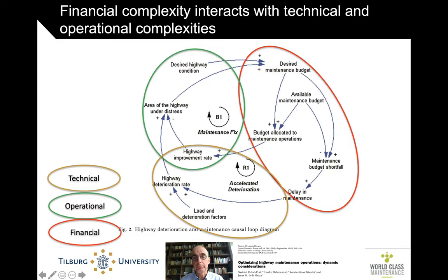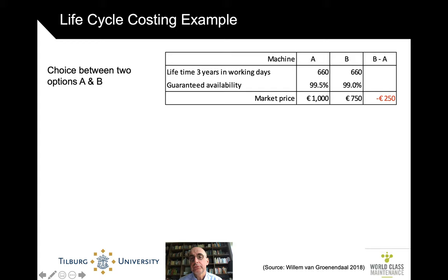Let's have a simple example. We have two machines: machine A and machine B. They both do the same thing. They both have a guaranteed lifetime of three years, which is in working days some 660 days. They almost have the same guaranteed availability of 99% or even 99.5%. Big difference: B is a lot cheaper than A. So this seems to be an easy decision — let's choose B because that's the cheaper purchase price.